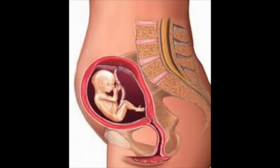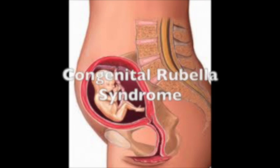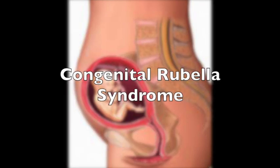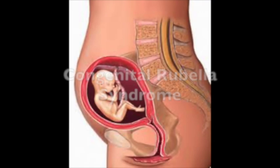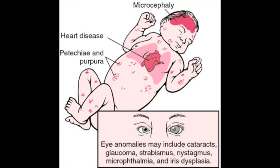The unborn child of an infected mother is at high risk for developing congenital rubella syndrome. Children born with congenital rubella syndrome may experience deafness, cataracts, heart defects, intellectual disabilities, liver and spleen damage, low birth weight, and a skin rash at birth.